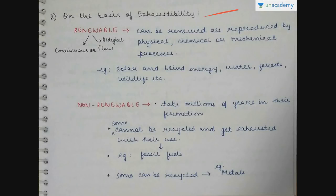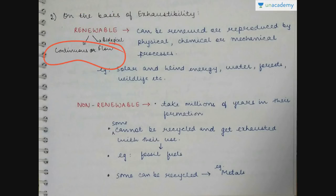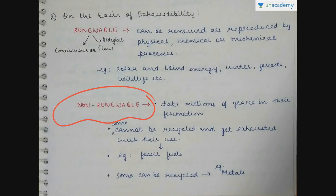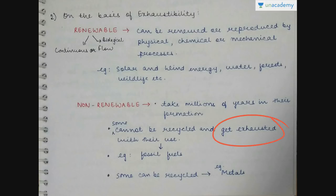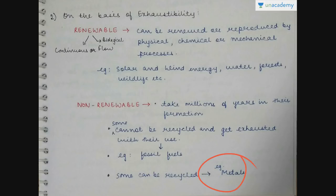On the basis of exhaustibility or renewability: renewable or inexhaustible resources can be renewed or reproduced by physical, chemical or mechanical processes — like solar energy, wind energy, water, forest, wildlife, etc. These are further divided into continuous flow resources like solar and wind energy, and biological ones like forest and wildlife. Then the non-renewable or exhaustible ones take millions of years in their formation. Some cannot be recycled and get exhausted with use, like fossil fuels, while some can be recycled, like metals.